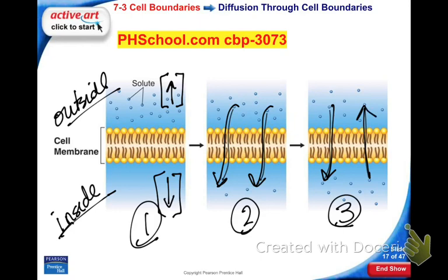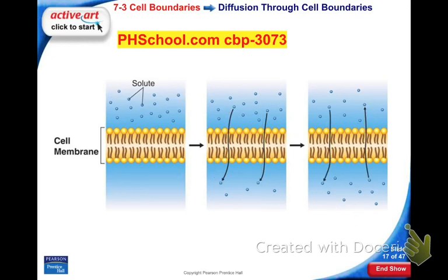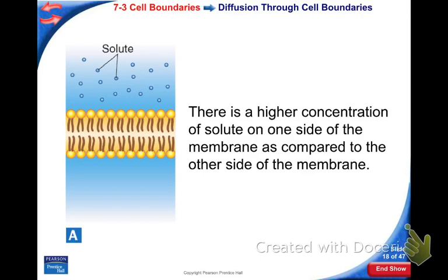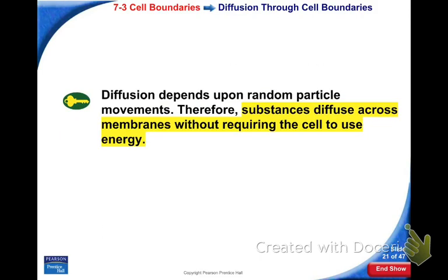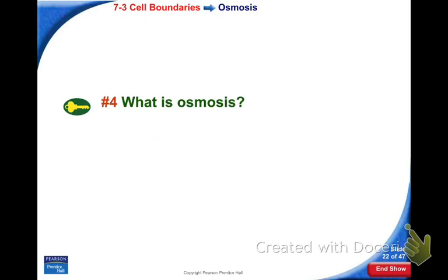In our lab activity, we're not looking at diffusion in general — we're looking at a specific type of diffusion. These just describe in words what's happening. We're looking at osmosis. Let's write down what we know about osmosis. Osmosis is a type of diffusion.